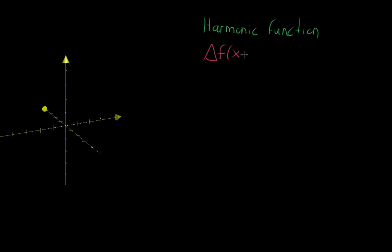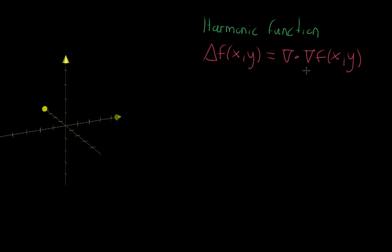It might have two inputs, it could have 100 inputs — just some kind of multivariable function with a scalar output. As a reminder, it's defined as the divergence of the gradient of f, and it's kind of like the second derivative — it's the way to extend the idea of the second derivative into multiple dimensions.